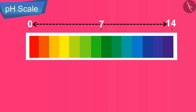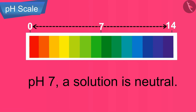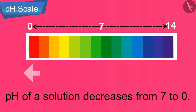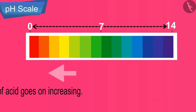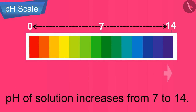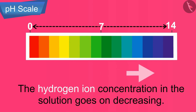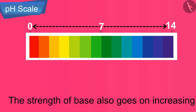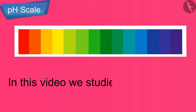In conclusion, at pH 7 a solution is neutral. As the pH decreases from 7 to 0, the hydrogen ion concentration increases and the strength of the acid goes on increasing. On the other hand, as the pH increases from 7, the hydroxide ion concentration increases and the strength of the base also goes on increasing. In this video we studied the pH scale, and in the next video we will study about salts.